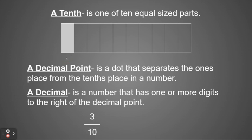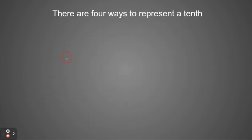Here's an example. If I had three tenths, I would write it as a decimal as zero ones, decimal point three, which means zero and three tenths.